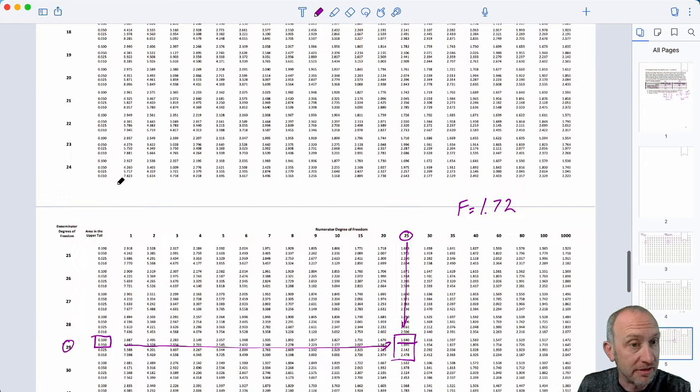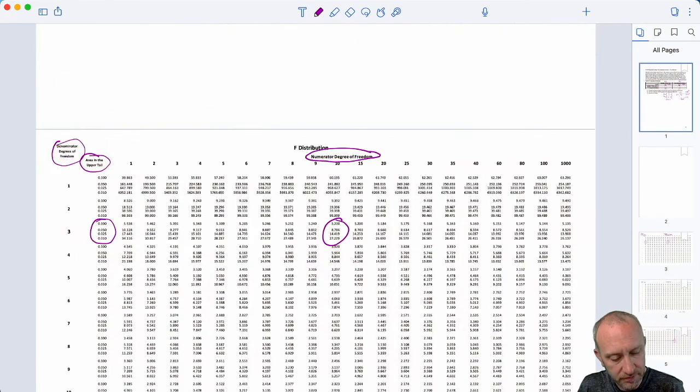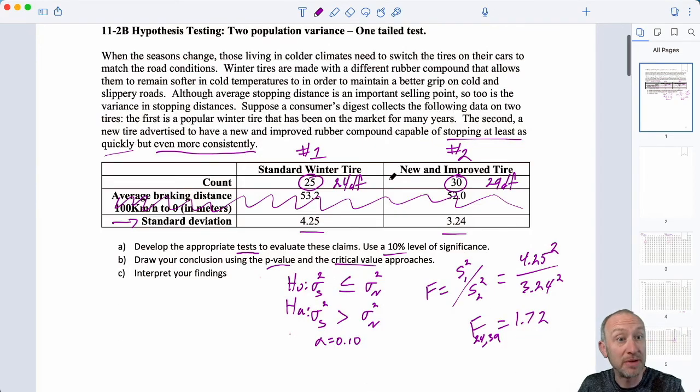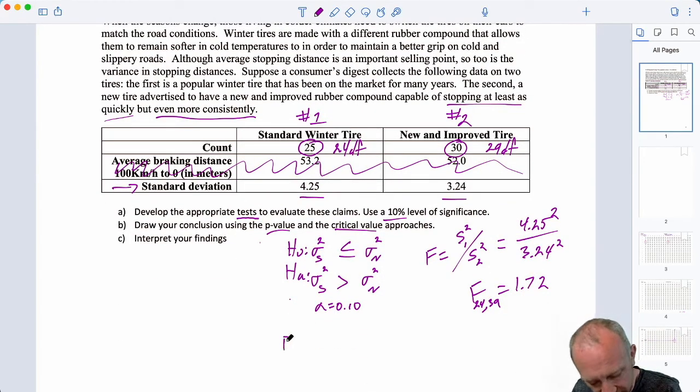Now, this is a one tail test. So, that upper tail probability is, in fact, my p-value. So, here I have my p-value for that test is less than 0.1 greater than 0.05.